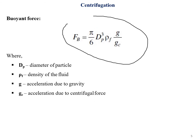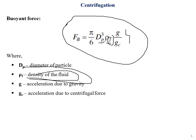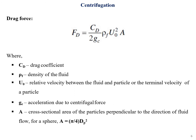For the buoyant force equation, dp remains the diameter of the particle, but here ρf represents the density of the fluid — since buoyant force acts on the fluid. g and gc remain the same, where gc is the acceleration due to centrifugal force.